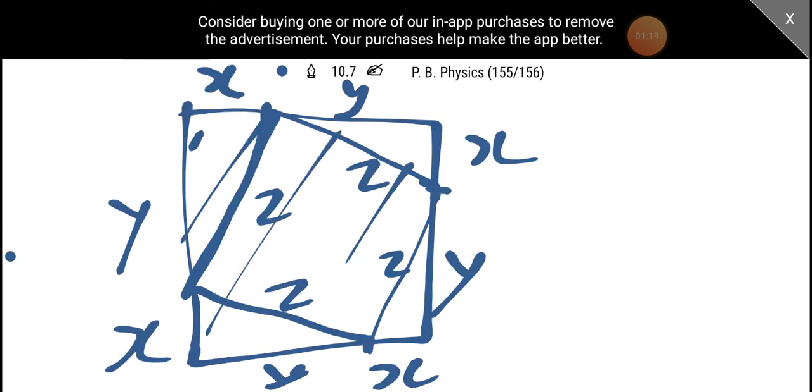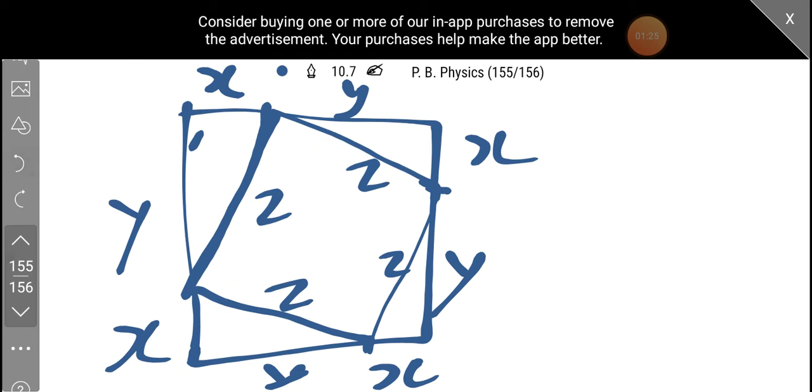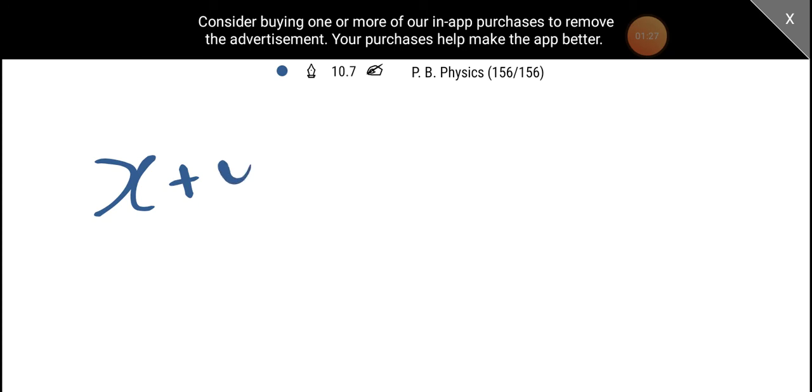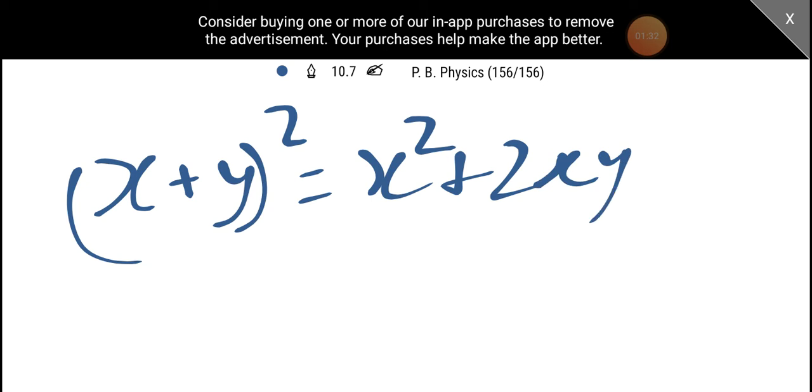The total area is x plus y all squared. That is equal to x² plus 2xy plus y².